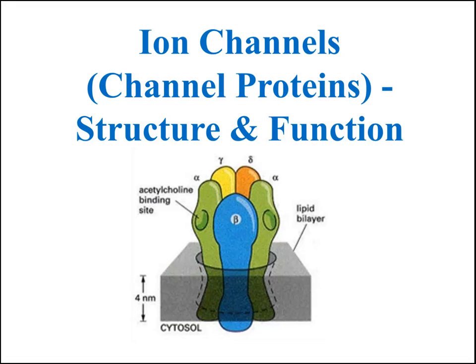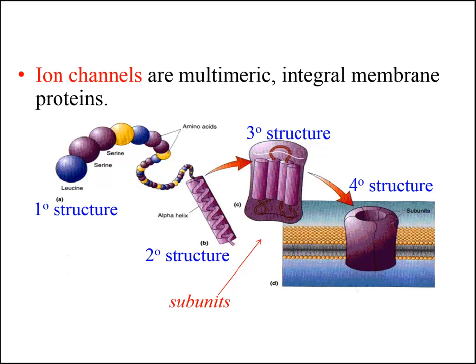The purpose of this screencast is to review the basic structure and function of ion channels. Electrical signals in the nervous system — graded potentials and action potentials — are generated by movement of ions across the nerve cell membrane.